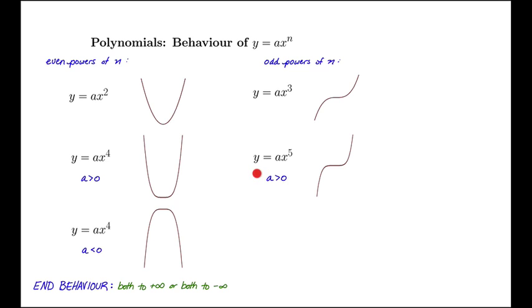When we look at y equals ax to the fifth, again a positive, we have a similar shape but steeper as we're getting to larger x's and flatter right here in the middle. When we take a negative coefficient and look at y equals ax to the fifth with a less than zero, we flip our graph around and see that we're going from positive infinity down to negative infinity as we travel from left to right on our graph.